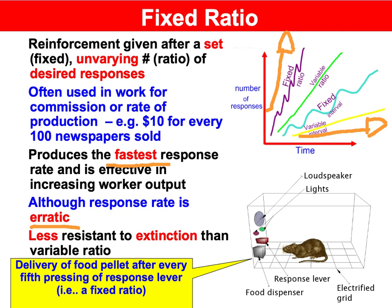The reason why it produces a fast response rate is because once the learner works out that — let's say they've got to press the lever ten times to be reinforced with food — it's just going to go bang bang bang as quick as it can until it gets that reinforcer. But it's an erratic response rate because once we've got to that tenth lever press and the food reinforcer has been delivered, motivation dips. Therefore the response rate dips until we get again close to that tenth hit on the lever and the reinforcer is delivered.